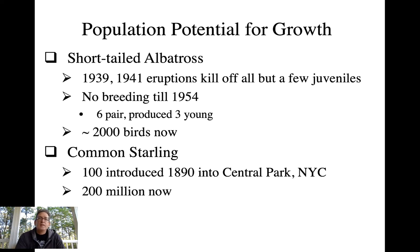In 1954, six pairs reproduced and produced three young. Today, after all those years, we're still only around 2,000 birds in this species. This all boils down to life history patterns — short-tailed albatross matures late in life, and when they do reproduce they may lay one egg every other year, so it's going to take a long time for those populations to build up.